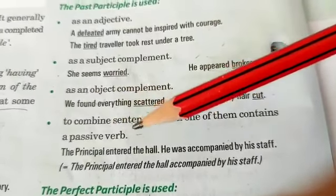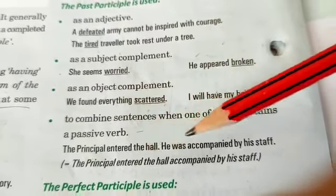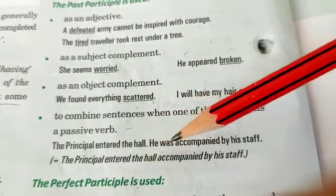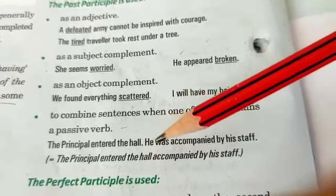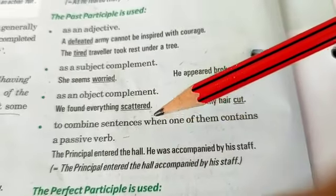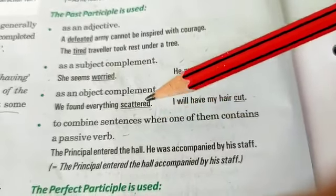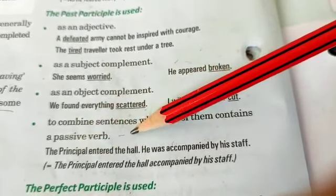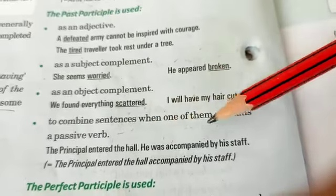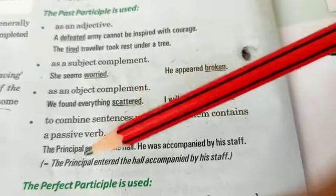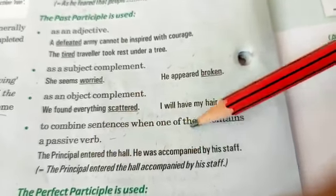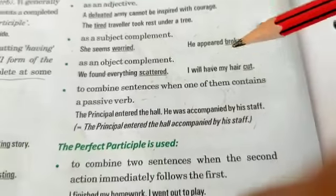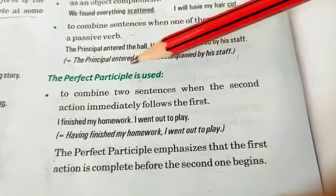Past participle is also used to combine sentences when one of them contains a passive verb. For example: 'The principal entered the hall. He was accompanied by his staff' becomes 'The principal entered the hall, accompanied by his staff' — the past participle joins the two sentences.